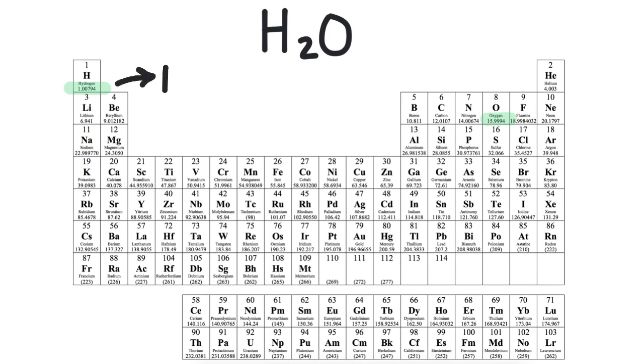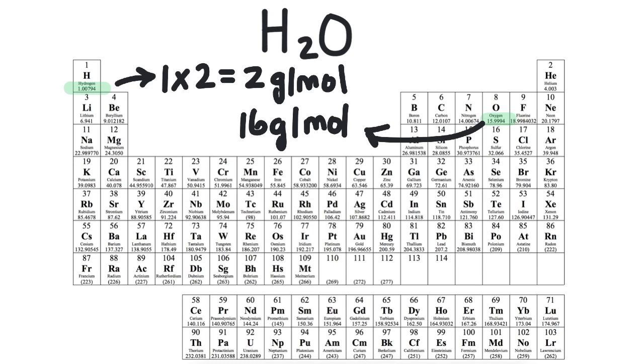Hydrogen has a molar mass of one and there are two of them. So we multiply that molar mass by two and we get two grams per mole. Then oxygen has a molar mass of 16. It's generally not necessary to use all the decimal places on the periodic table.